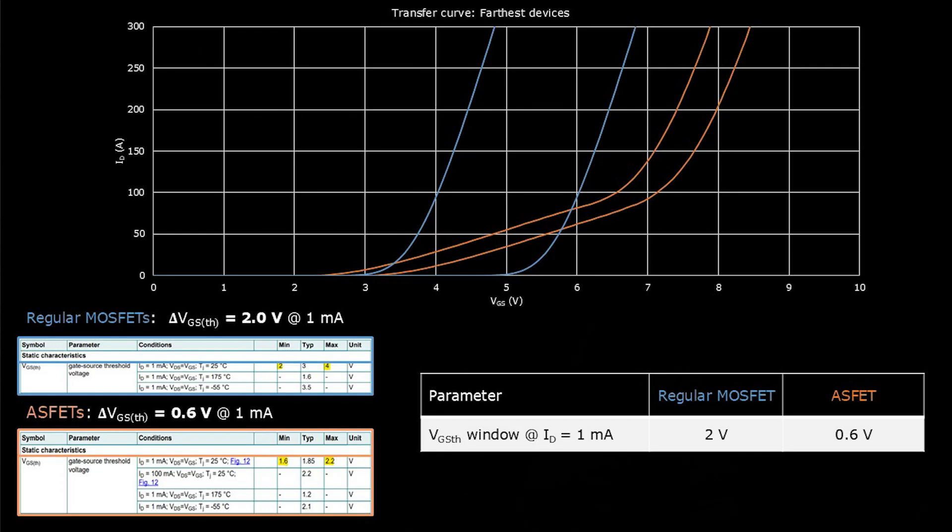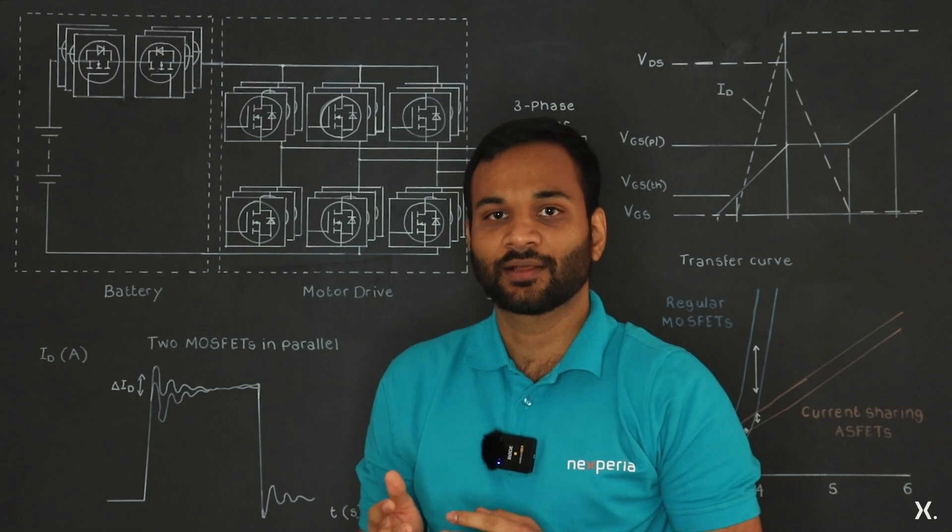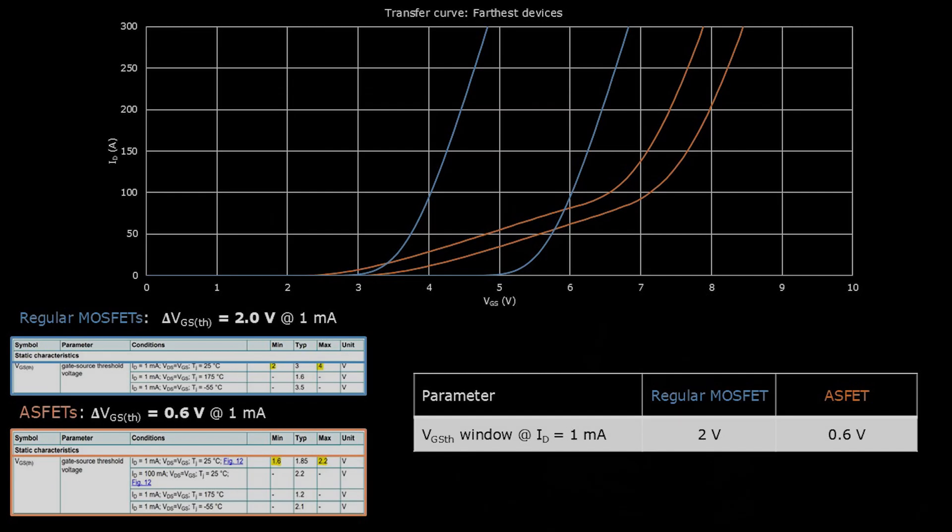The MOSFET threshold window is the difference between min and max values of a MOSFETs threshold voltage mentioned in its datasheet. For a regular MOSFET, this is typically 2V, but the newer generations bring it down to about 1.2V. Our MOSFETs, which are optimized for enhanced current sharing, shrink it down to just 0.6V.